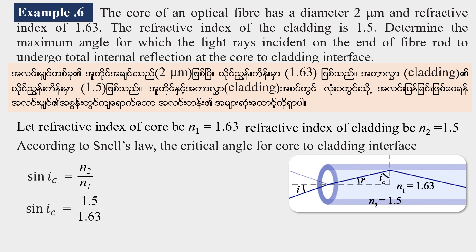This gives 1.5 divided by 1.63, which equals 0.9202. So the critical angle is the inverse sine of 0.9202, which gives 66.95 degrees, approximately 67 degrees.